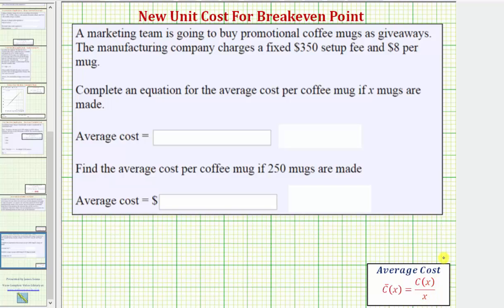So let's begin by determining our cost function from the given information. Our cost function C(x) is going to be equal to, well there's a fixed cost of $350 which won't change regardless of how many mugs are made. So the cost function C(x) equals 350 plus, and then there's an $8 fee per mug so this would be plus 8x where x is the number of coffee mugs made.